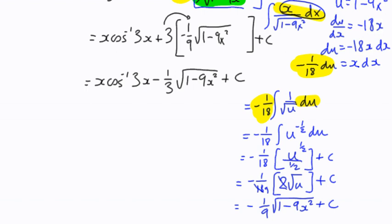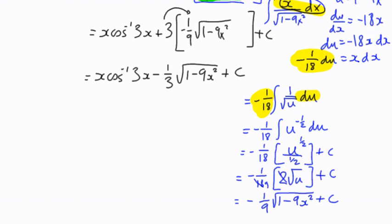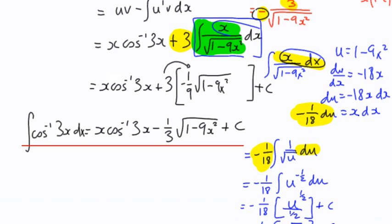And that is our result for the integral of the inverse cos of 3x with respect to x, is x times the inverse cos of 3x minus a third times the square root of 1 minus 9x squared, plus c. So a little bit more involved because we had to do the integration by substitution. But hopefully that kind of makes sense. Go back and try it again. It is a wee bit more complex, but it's worth being able to do. Thank you.